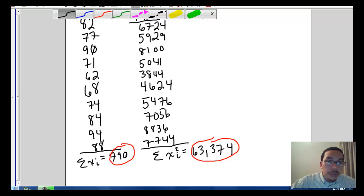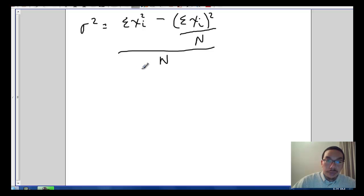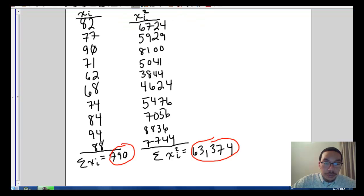Let's use another sheet of paper and go back to our formula. Our computational formula was sigma squared is equal to the sum of x sub i squared minus the sum of x sub i, we'll square that over n and all divided by n. So we plug in the sum of the x sub i squared, which is 63,374.